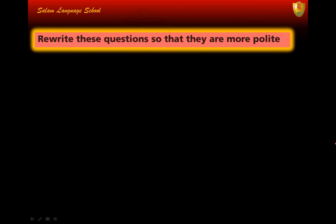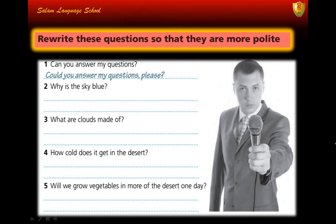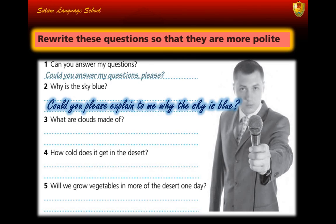Write these questions so that they are more polite — try to remember the functions book. Number one: 'Can you answer my question?' — to make it more polite you say 'Could you answer my question, please?' Number two: 'Why is the sky blue?' — to make it more polite you say 'Could you please explain to me why the sky is blue?'